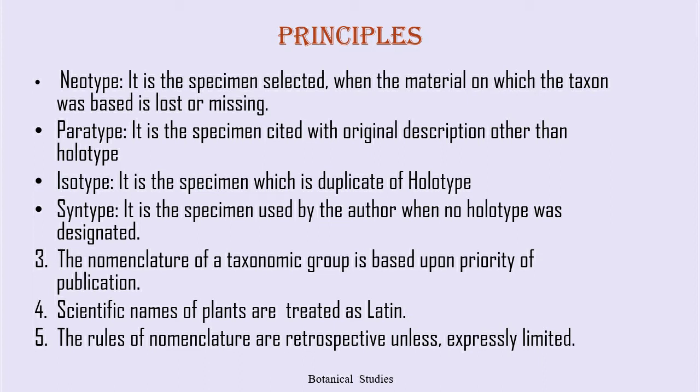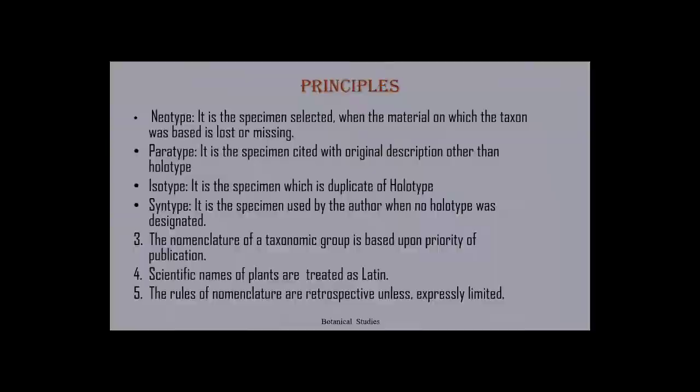The nomenclature of a taxonomic group is based upon priority of publication. Scientific names of plants are treated as Latin. The rules of nomenclature are retrospective unless expressly limited.